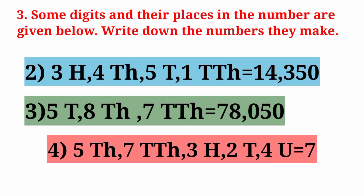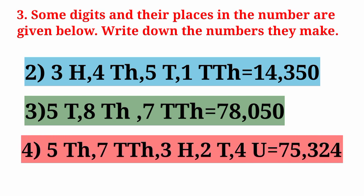Next digits: 5 thousands, 7 ten thousands, 3 hundreds, 2 tens, and 4 units. Number will be 75,324.